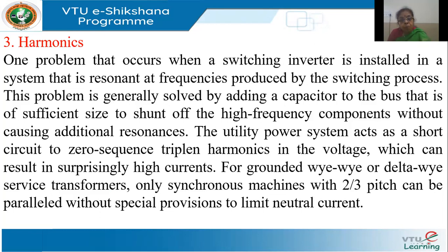The utility can effectively block third harmonic currents — that is the zero sequence currents — by using a delta connected transformer, whereas this is not possible for a DG. If we are using synchronous machines, there is a full possibility that these machines will inject third harmonic currents into the grid. Therefore, to reduce the third harmonic current, the machines must be designed with two-third pitch.